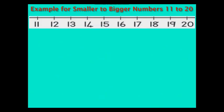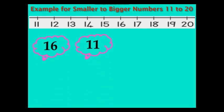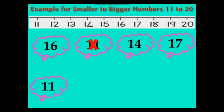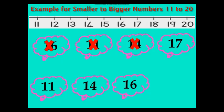Let us see some more numbers now. 16, 11, 14 and 17. 11 is the smallest number here. The next small number after 11 is 14. The next small number after 14 is 16. And the biggest number here is 17.